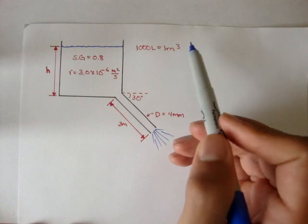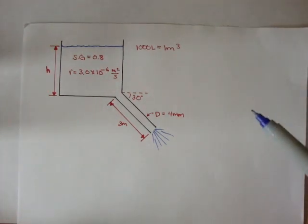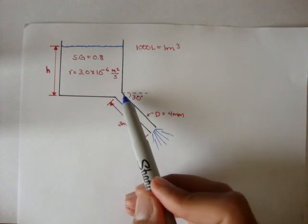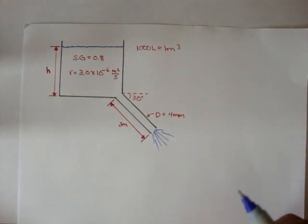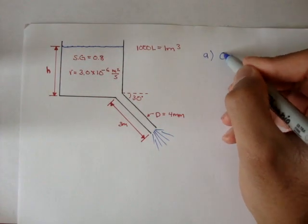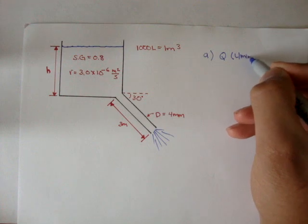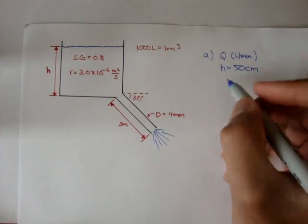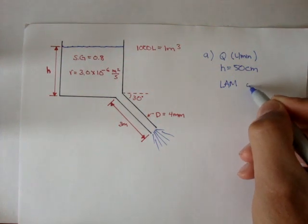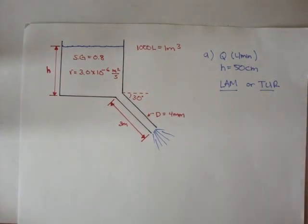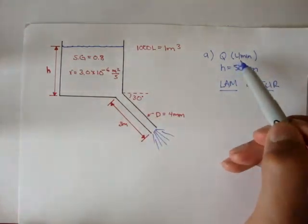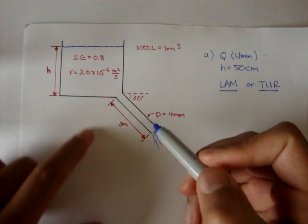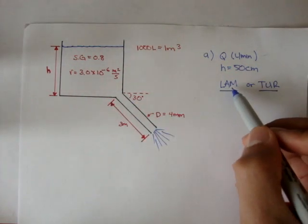1,000 liters is equal to 1 meter cubed. The question says: consider the flow of kerosene out of the inclined reservoir tube. Neglecting entrance losses and assuming steady flow, determine the flow rate Q in liters per minute for a height of 50 centimeters, and determine whether the flow is laminar or turbulent.